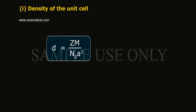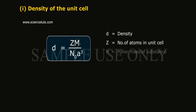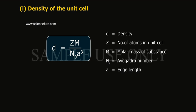Density of the unit cell: D is equal to ZM by N₀a³, where D is equal to density, Z is equal to number of atoms in unit cell, M is equal to molar mass of substance, N₀ is equal to Avogadro number, a is equal to edge length, and a³ is equal to volume.